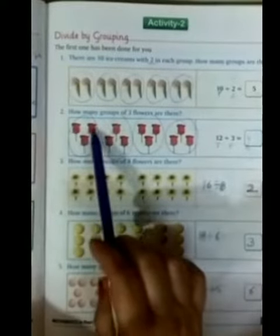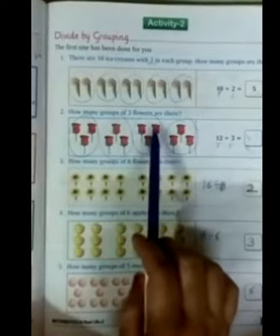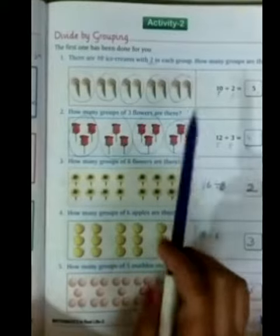Now, total. Total flowers count. 1, 2, 3, 4, 5, 6, 7, 8, 9, 10, 11, 12. So total flowers is how many? 12.